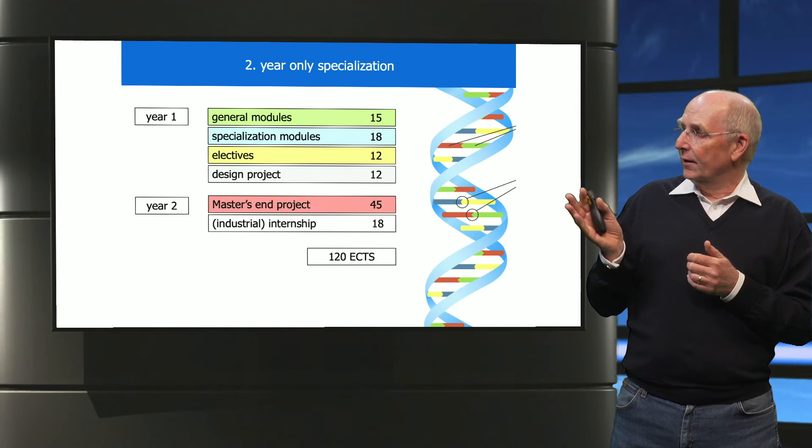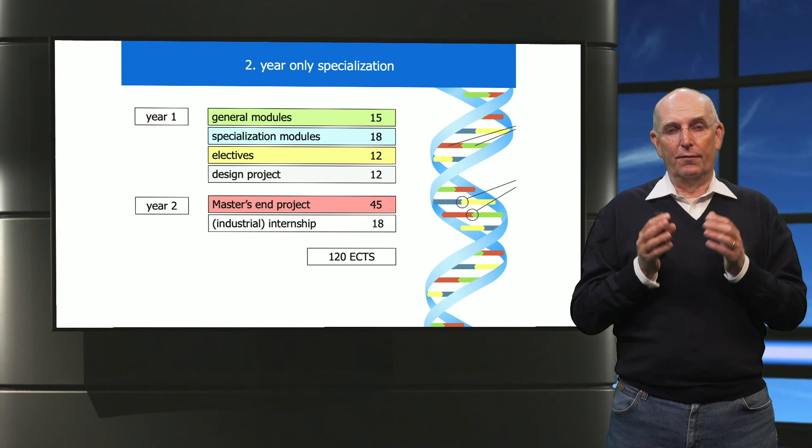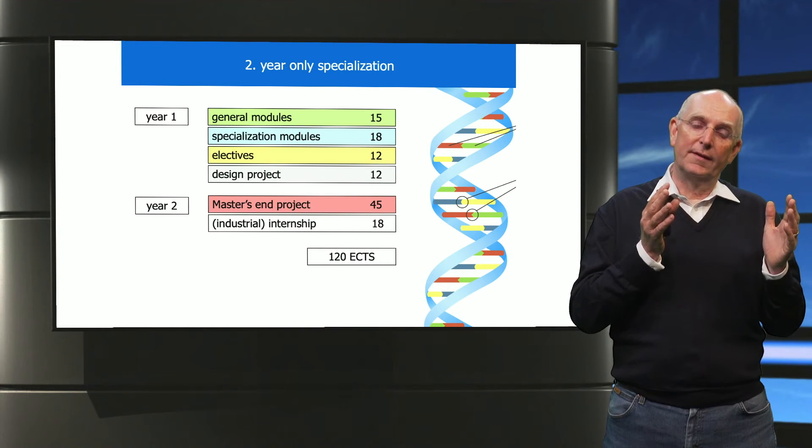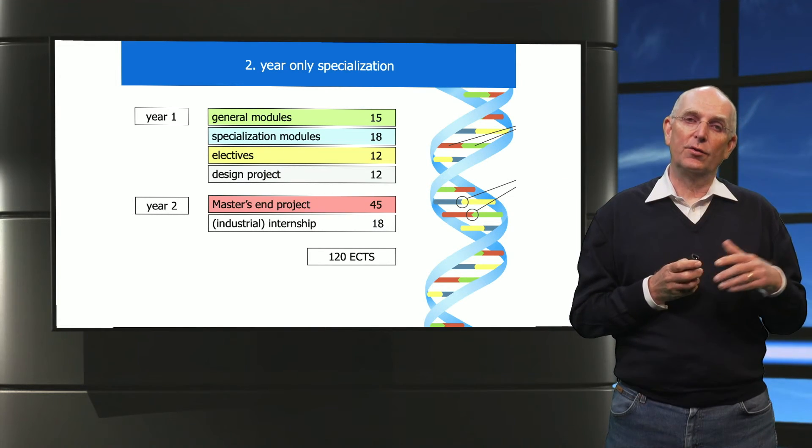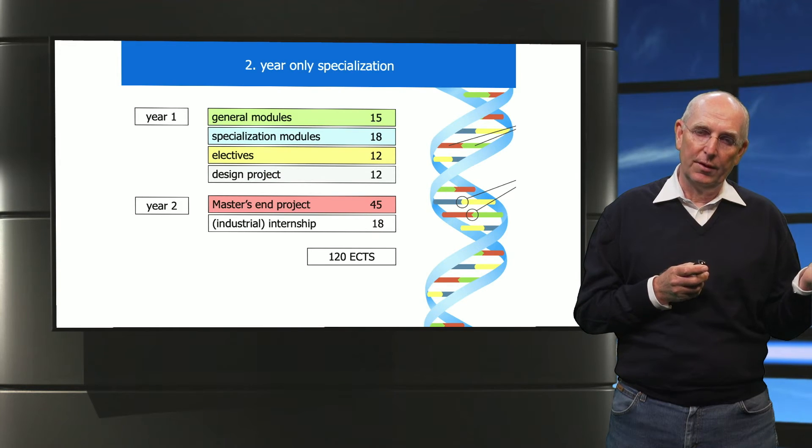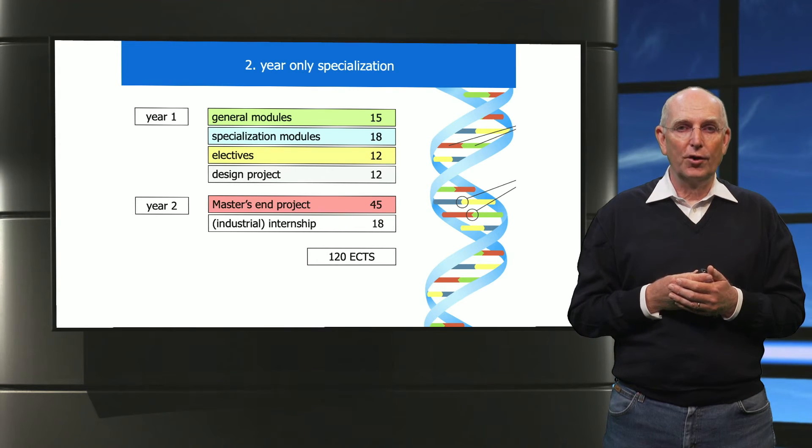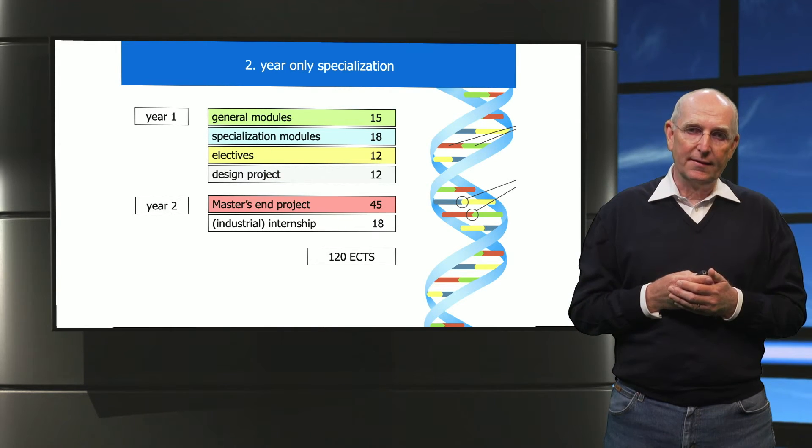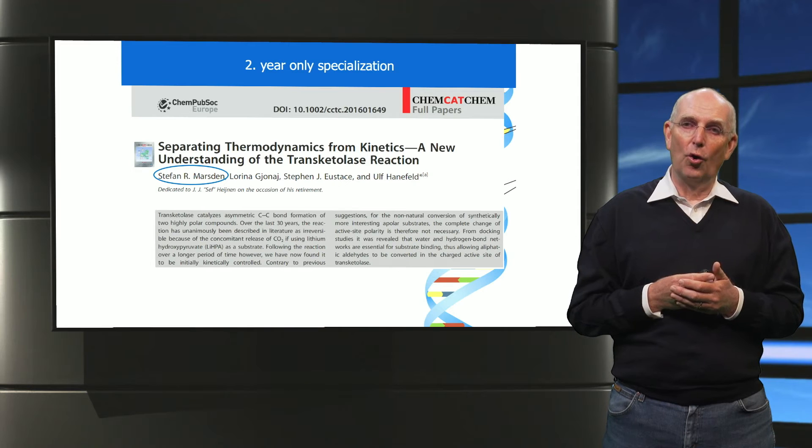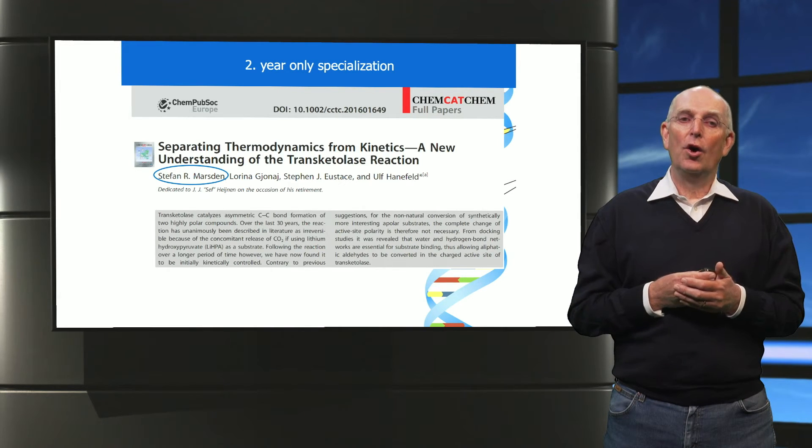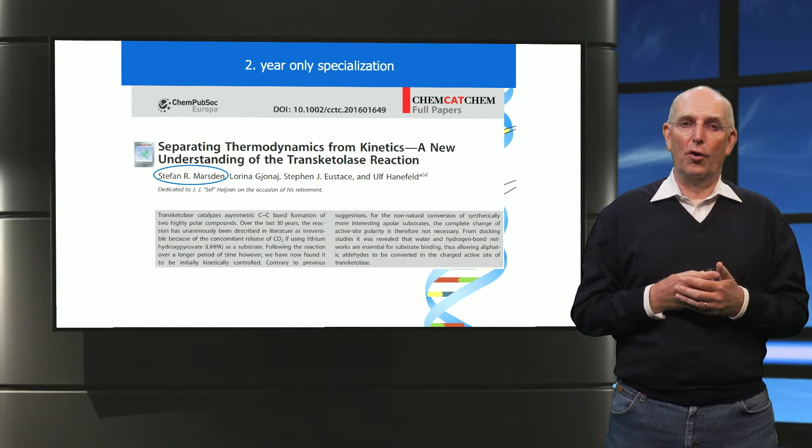In the second year you then concentrate on the final project, which you will do entirely on your specialization, and you will follow your industrial internship. You will round this off with a nice piece of work, the master end project, and this in many cases will lead to you being the author of a publication or being the co-author of a patent.